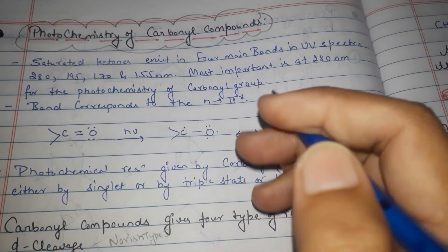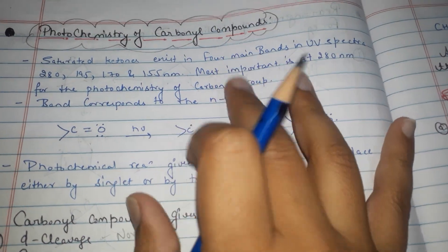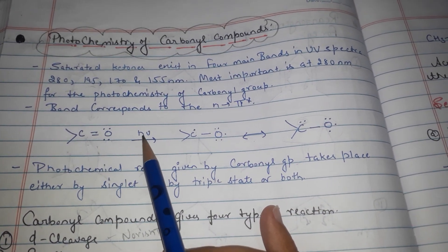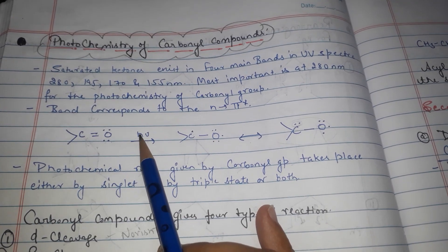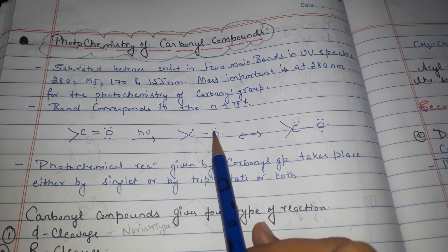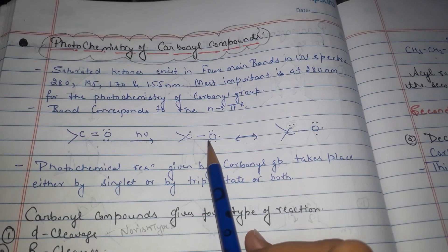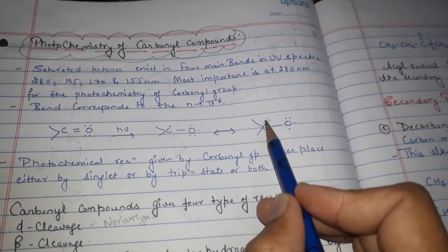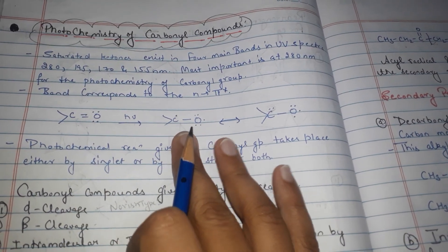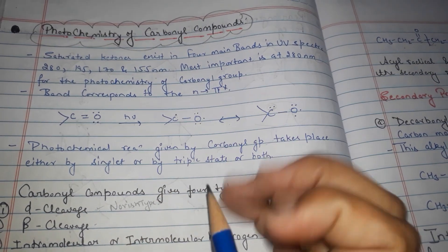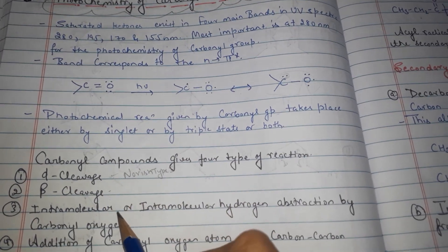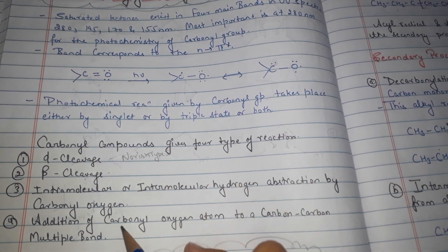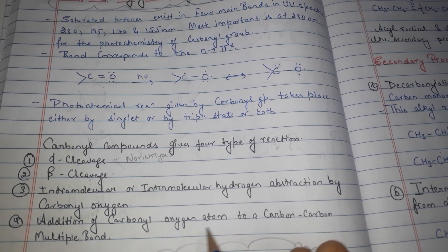Welcome to MSC Chemistry. Today's topic is photochemistry of carbonyl compounds. When a carbonyl compound is in the presence of light, it forms radicals — one on carbon and one on oxygen. Photochemistry of carbonyl compounds consists of four types of reactions: alpha cleavage, beta cleavage, intermolecular or intramolecular hydrogen abstraction by carbonyl oxygen, and addition of carbonyl oxygen to a carbon-carbon multiple bond.